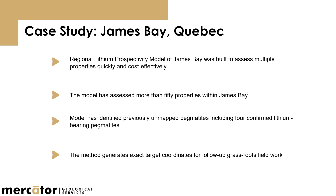It was fairly successful — every property essentially has targets on it because of the probability map. When we went into the field to look at some of these properties, we found pegmatite types that weren't mapped before. They weren't always spodumene-bearing, but four of them were. So we did find some new spodumene occurrences in the area on our clients' properties using this tool. The system generates target coordinates that our geologists can go to on site — they use these targets, bumping around the site to find the area, usually with only about two days on site. We try to maximize that time by telling them where they're most likely to find success, and they come with tablets with the prospectivity maps loaded on them.